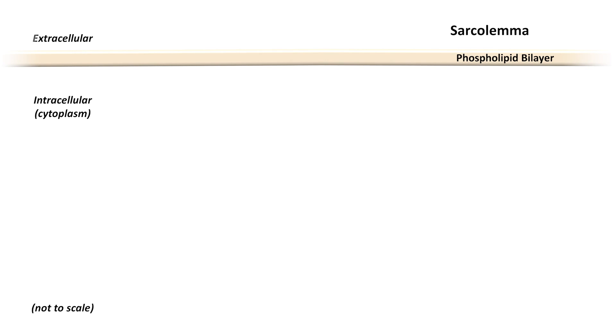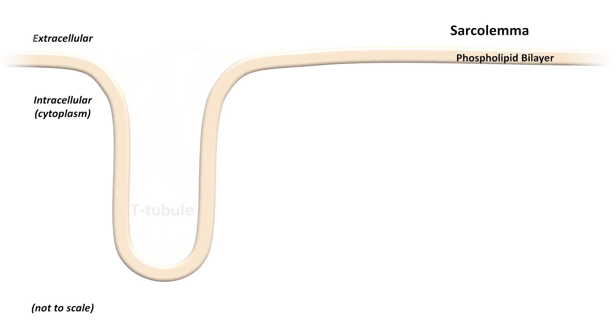The excitation part starts with the sarcolemma, which is a fancy name for the cell membrane of the cardiomyocyte that also includes integral membrane proteins that help anchor the cell to the extracellular matrix. The sarcolemma contains many invaginations of cell membrane called T-tubules.